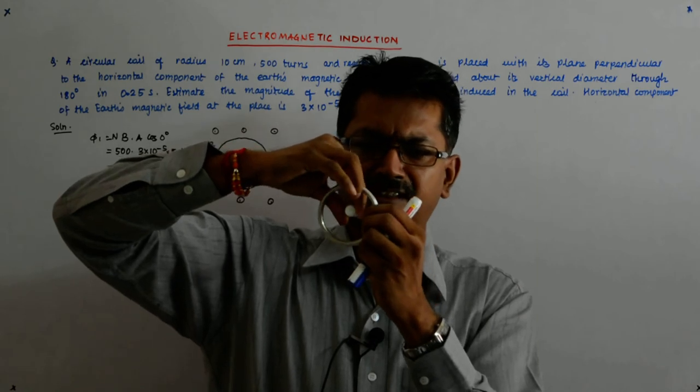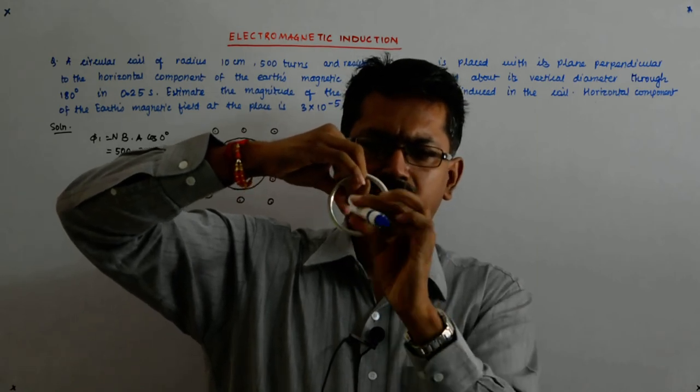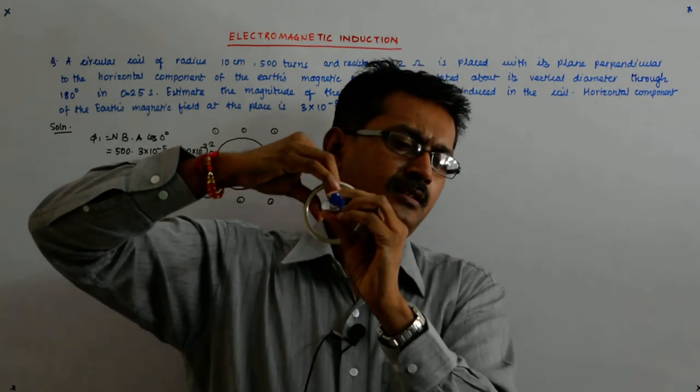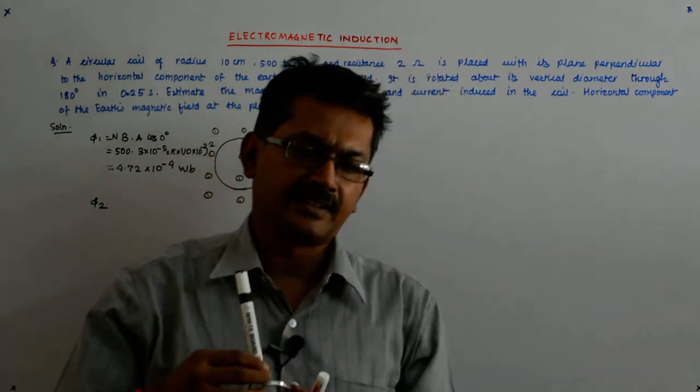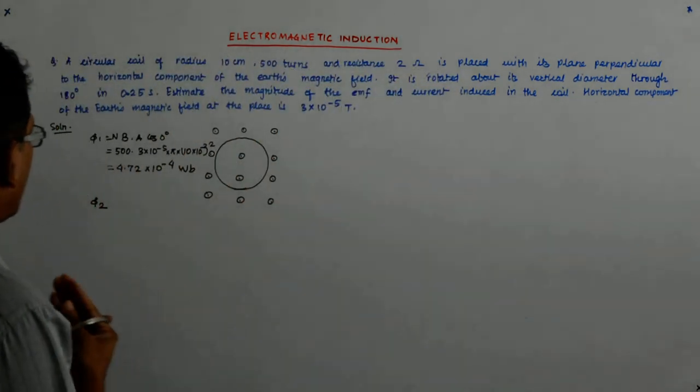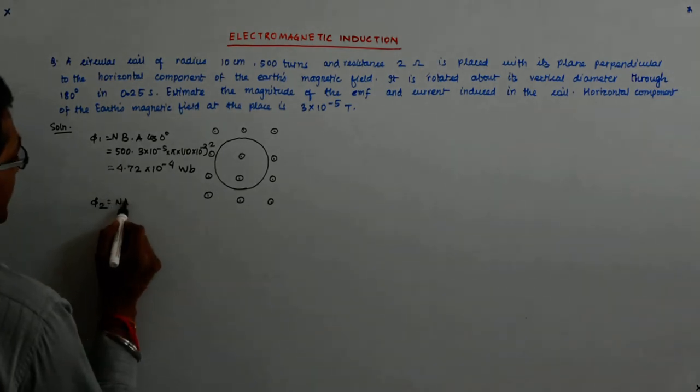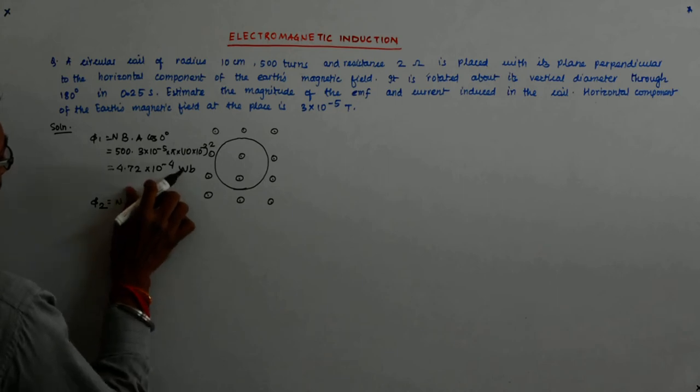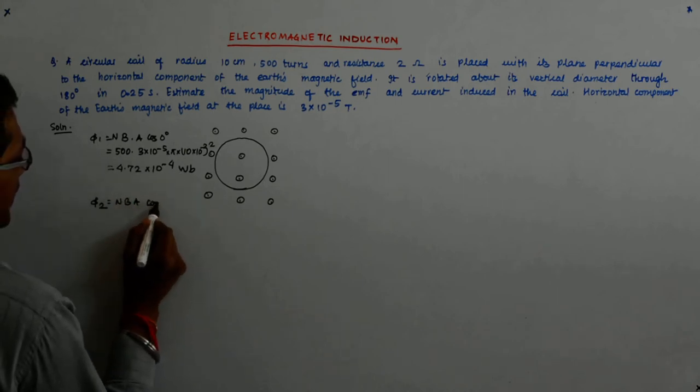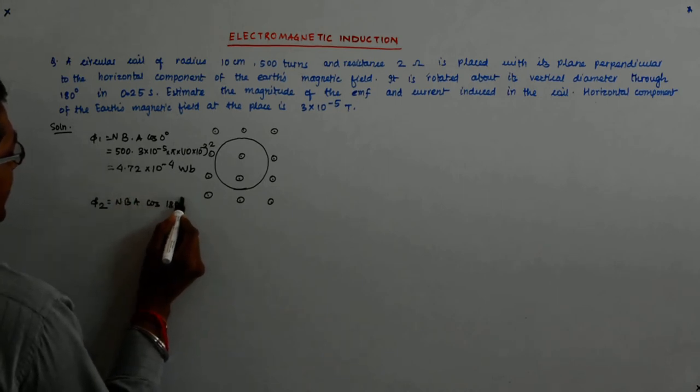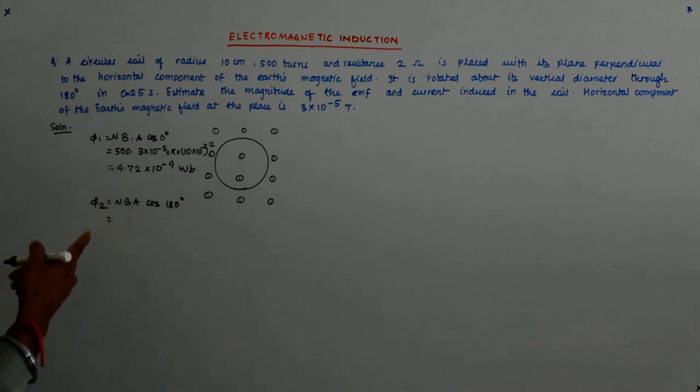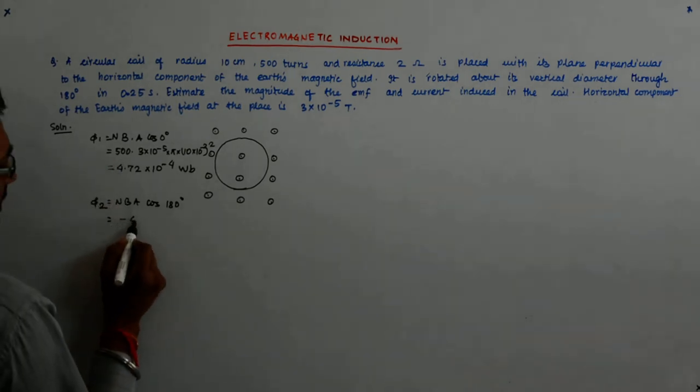And my field still remains in the same direction. Obviously, it is the earth's magnetic field. It is not going to change. Now, what is the angle? 180 degrees. So it becomes NBA cos 180 degree.